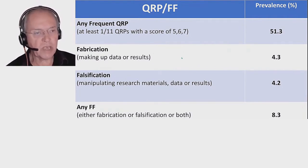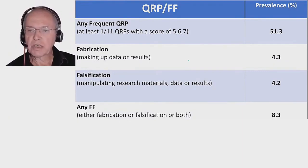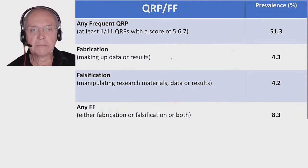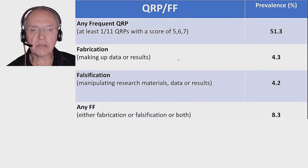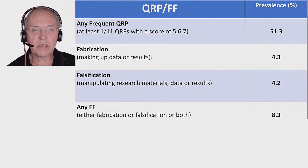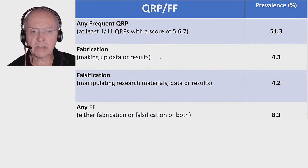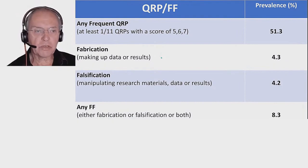We also asked about fabrication and falsification — sensitive questions — with some fancy methodology where only yes or no answers were possible. And a bit amazingly, maybe more than 4% admitted to having fabricated data during the last three years, and another 4% admitted to falsifying data in the last three years. That is a bit higher than what is in the 42 surveys to date that also looked at this — the first 21 were summarized in the excellent review by Daniele Fanelli a number of years ago, and there was another review earlier this year that takes all 42 together. So we are in the upper range, but not out of limits.